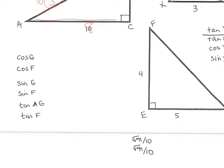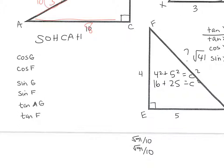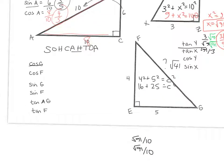The last triangle — I don't have the hypotenuse, so I'll find it: 4 squared plus 5 squared equals C squared, so 16 plus 25 equals C squared, giving the square root of 41. For cosine of G — cosine is adjacent over hypotenuse — adjacent to G is 5 and the hypotenuse is the square root of 41, so it's 5 over root 41. Rationalize by multiplying top and bottom by root 41: the answer is 5 root 41 over 41. Cosine of F is adjacent over hypotenuse: that's 4 over root 41, which rationalizes to 4 root 41 over 41.